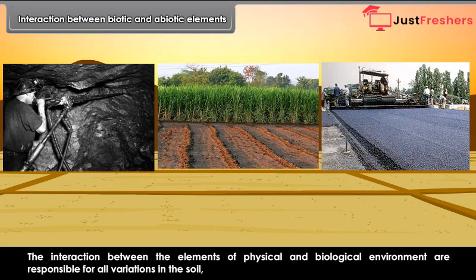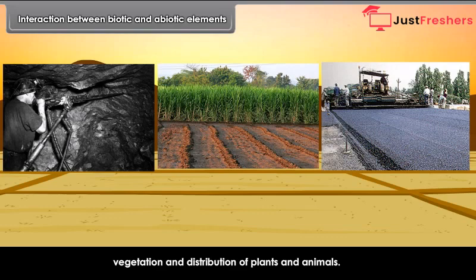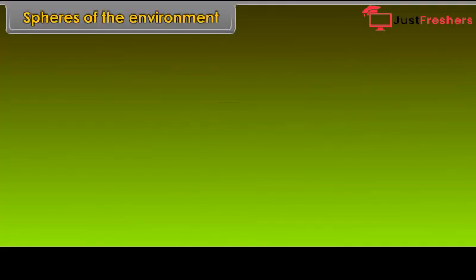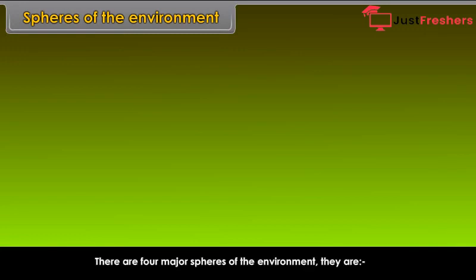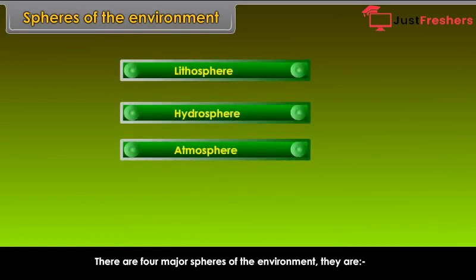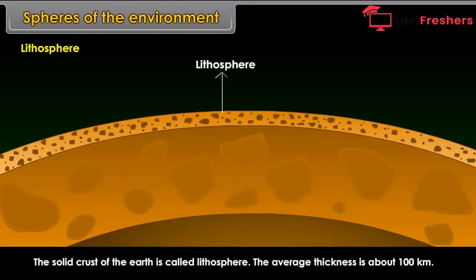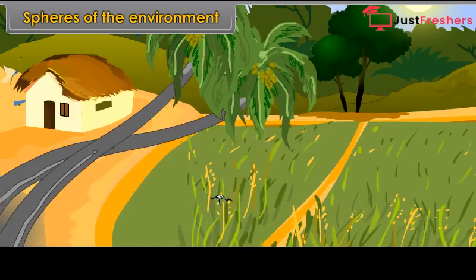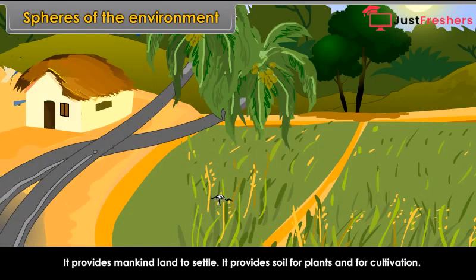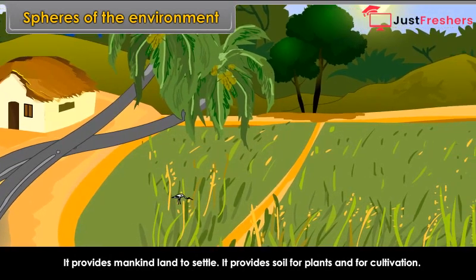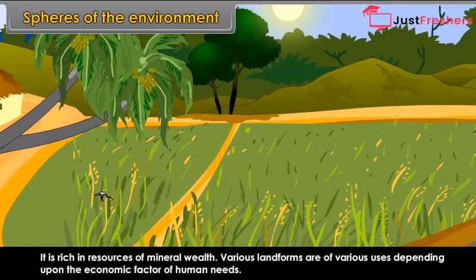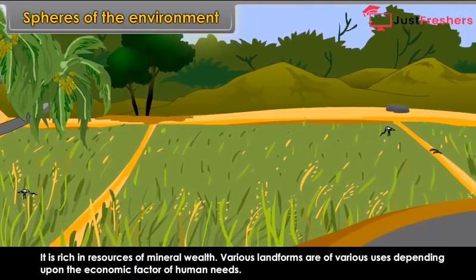Vegetation and distribution of plants and animals. Spheres of the environment: There are four major spheres of the environment — lithosphere, hydrosphere, atmosphere, and biosphere. Lithosphere: The solid crust of the earth is called lithosphere. Its average thickness is about 100 km. Importance: It provides mankind land to settle, soil for plants and cultivation, and is rich in mineral wealth. Various landforms serve different uses depending upon human needs.